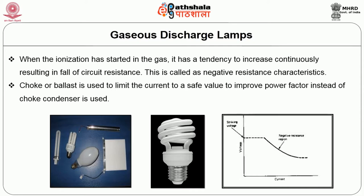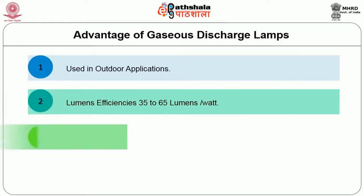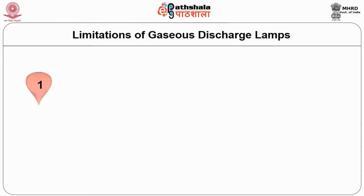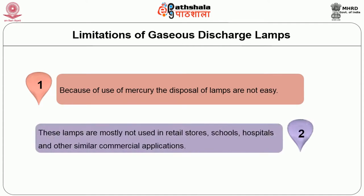Advantages of gaseous discharge lamps: used in outdoor applications, luminous efficiency of 30 to 65 lumens per watt, long bulb life of 24,000 hours. Limitations: because of the use of mercury, disposal of lamps is not easy. These lamps are typically not used in retail stores, schools, hospitals, and other similar commercial applications.